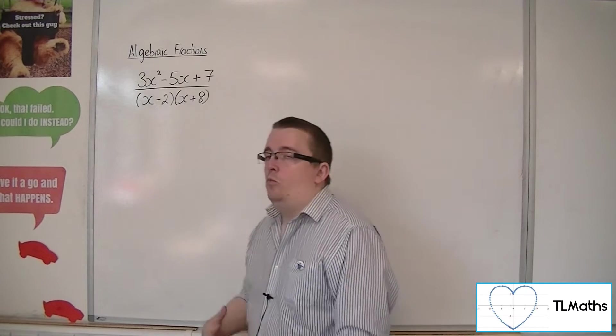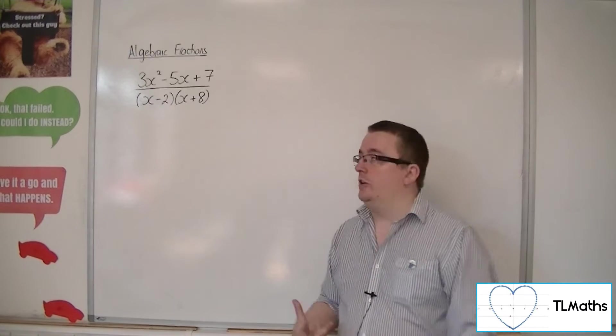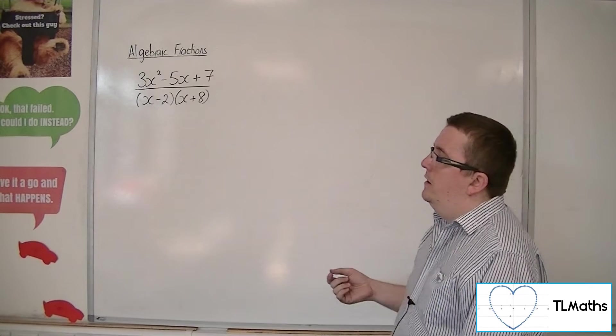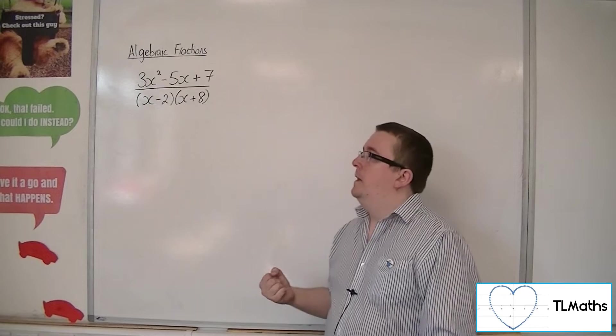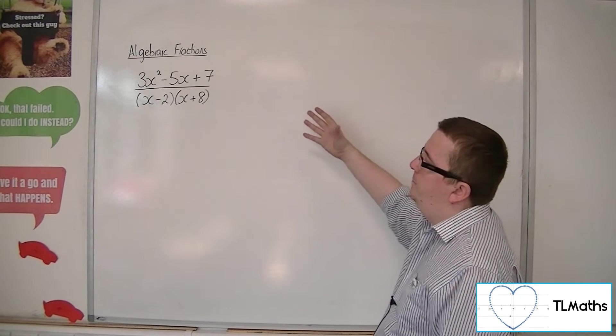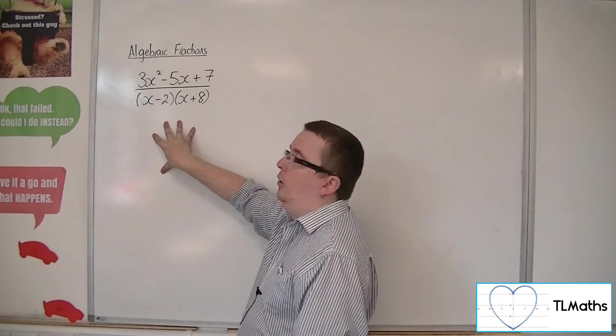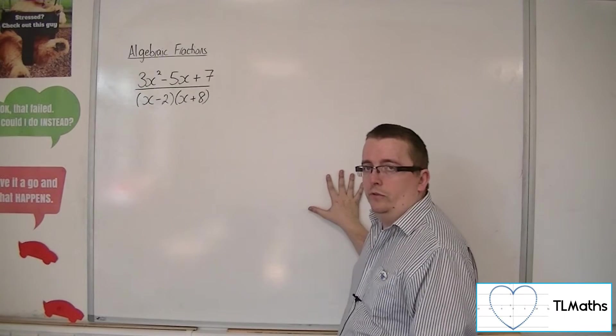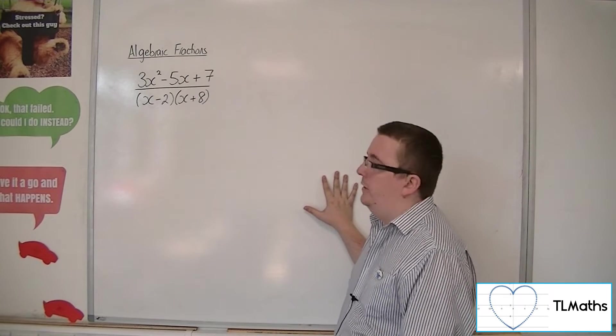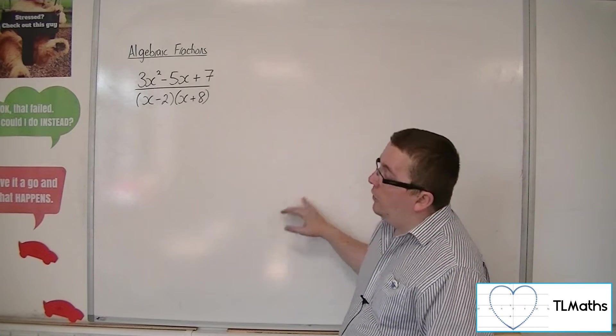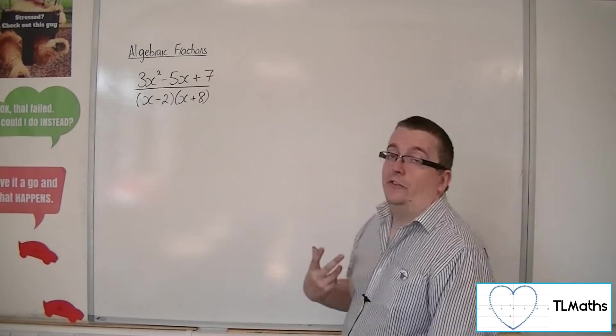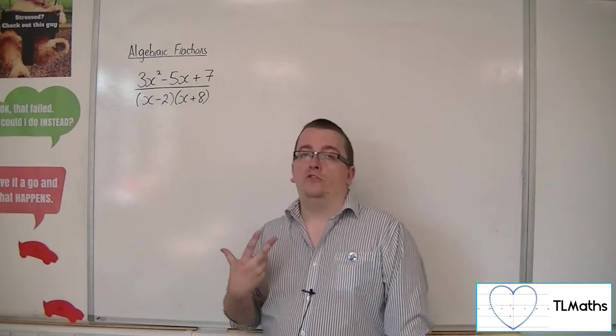So if you then wanted to do partial fractions on something like this, then there is a problem because you cannot write it as a sum of proper fractions. It wouldn't make much sense to do that. So we have to do something first, and that something is actually polynomial division.